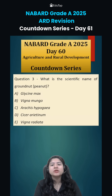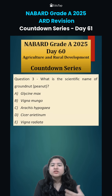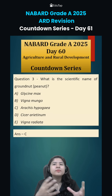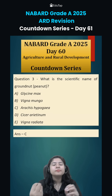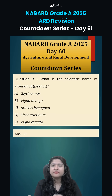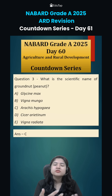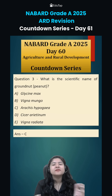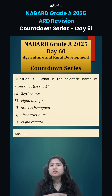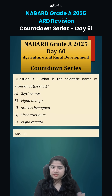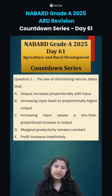Coming to question number 3, what is the scientific name of groundnut? It is Arachis hypogaea, it belongs to the Leguminaceae family, and it has a rich source of protein as well as oil content — around 45–50% oil content.